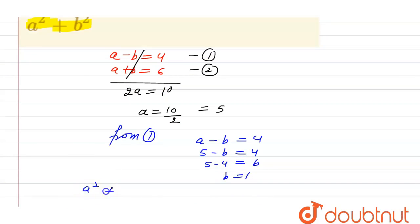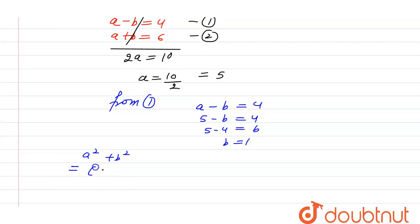Now we can calculate the value of a squared plus b squared. The value of a is 5, so 5 squared plus 1 squared, which equals 25 plus 1, equals 26. Thank you.